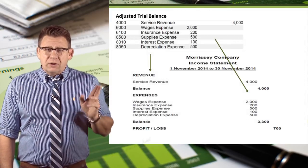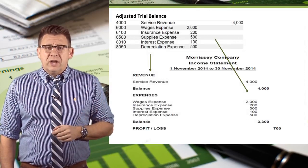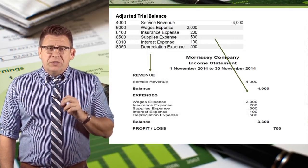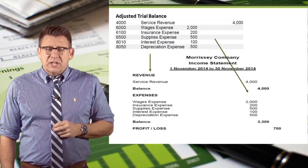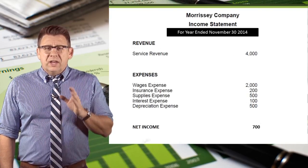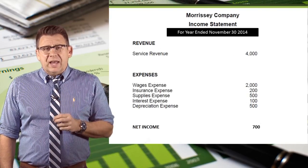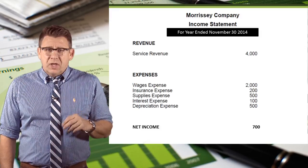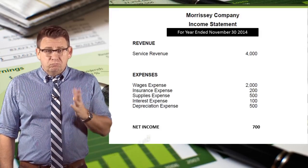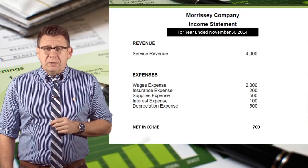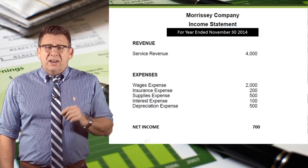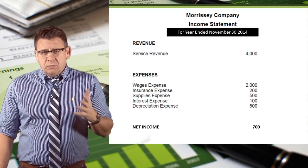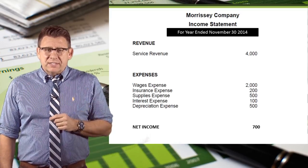We take revenues and expenses from the trial balance and put those on the income statement. The income statement includes the company name, the name of the financial statement, and the date — which is always 'year ended' followed by whatever the date is.